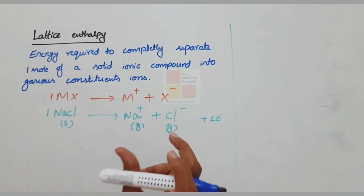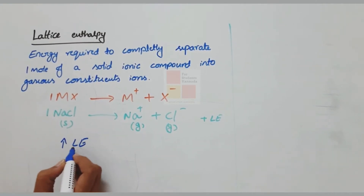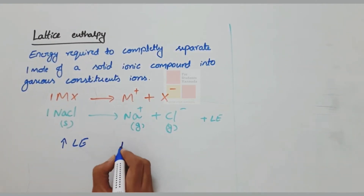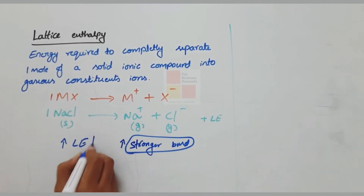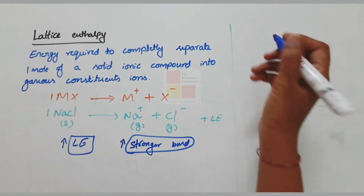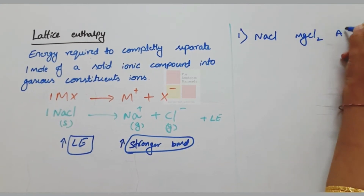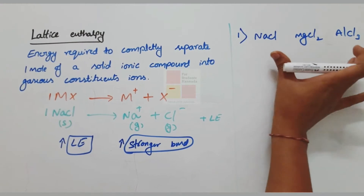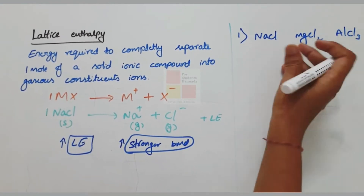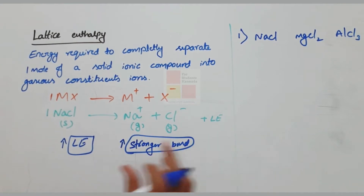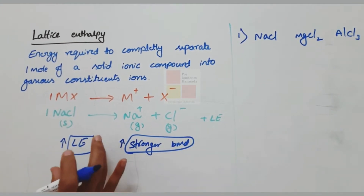The stronger the ionic bond, the more lattice enthalpy is needed. More lattice enthalpy means a more stronger bond. For example, comparing NaCl, MgCl2, and AlCl3 — AlCl3 has the most strong ionic bond. So more lattice energy means a stronger bond.